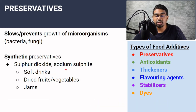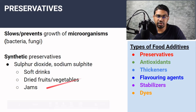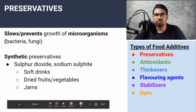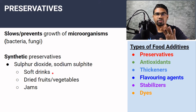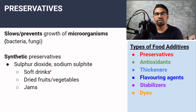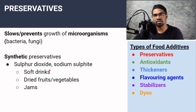Then we have sulphur dioxide and sodium sulphite — another type of preservative. They are used in soft drinks, dried fruit and vegetables, as well as jams. Without these preservatives, food will not last very long on the shelf, which affects food production. If food cannot last long, we cannot mass produce it, and unsold food will go to waste.